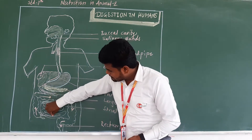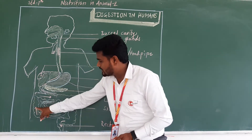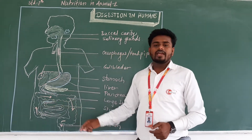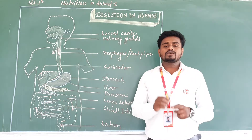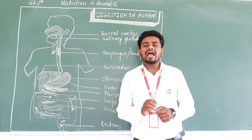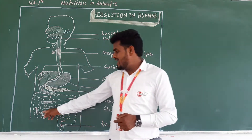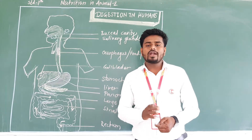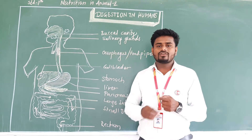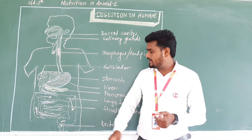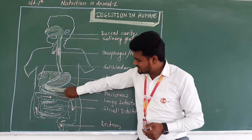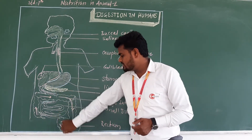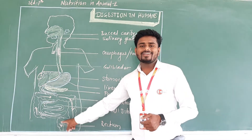Whatever remaining food substances are left, they pass into the large intestine. The large intestine is about one and a half meters long. In the large intestine, absorption of salts and water takes place, and after that the remaining food passes through and is stored in the rectum.